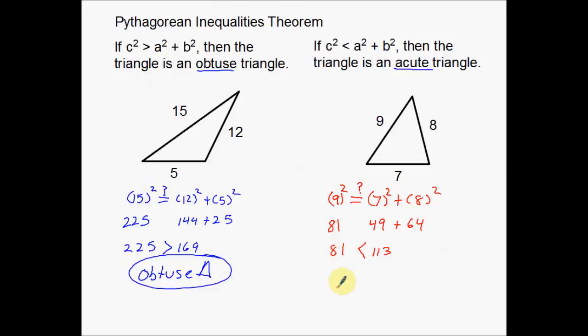This hypotenuse is too small. Since it is too small, it creates a small angle over here, which means this is going to be an acute triangle. It's going to be an acute triangle because that side is so small.